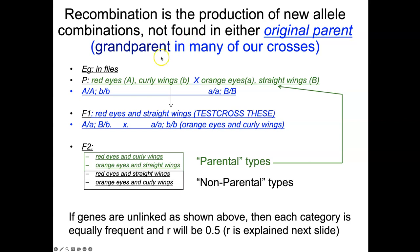I'm going to start here with just a quick explanation using genes that are unlinked. Unlinked specifically means that the genes are on two different chromosomes. So we're following gene A, which is on one chromosome, and then on a different chromosome, gene B.